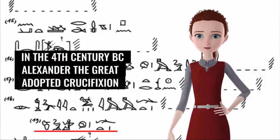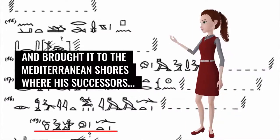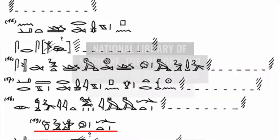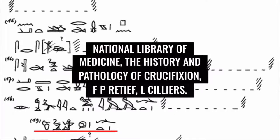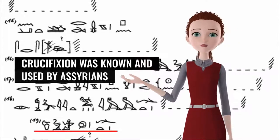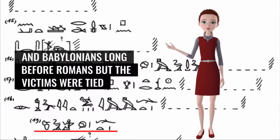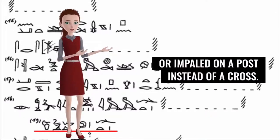In the 4th century BC, Alexander the Great adopted crucifixion and brought it to the Mediterranean shores. National Library of Medicine, The History and Pathology of Crucifixion, F.P. Retief and L. Cilliers. Crucifixion was known and used by Assyrians and Babylonians long before Romans, but the victims were tied or impaled on a post instead of the cross.